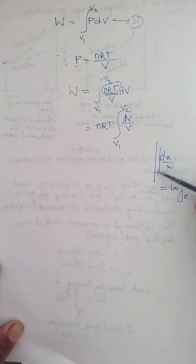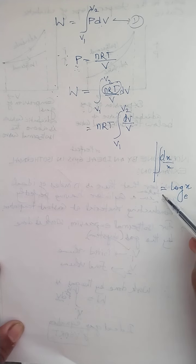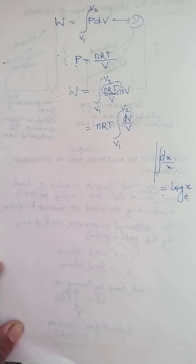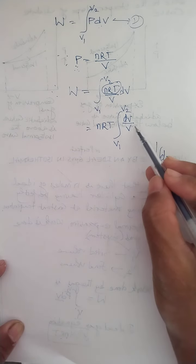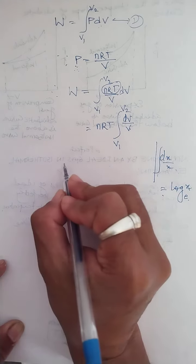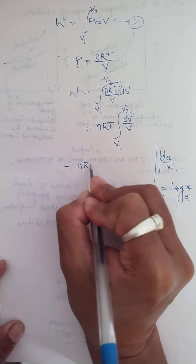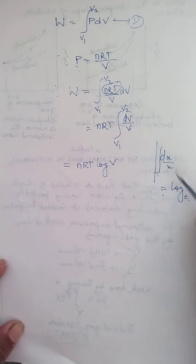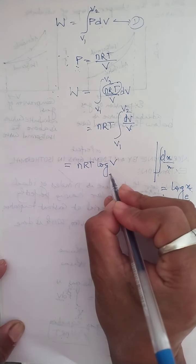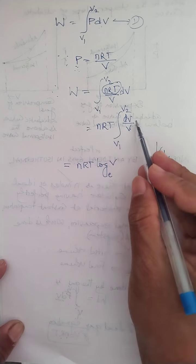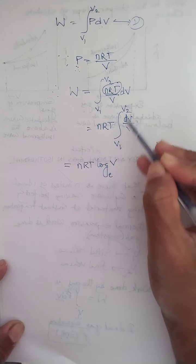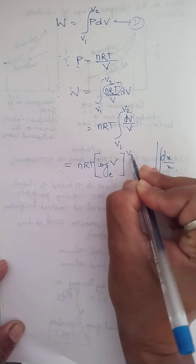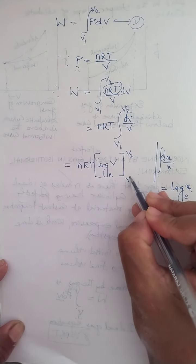In calculus, the formula for integration of dx/x is log x with base e. So the integration of dV/V is log V with base e. After integration, applying the limits: W = nRT × [log_e V] from V1 to V2, which expands as upper limit minus lower limit.